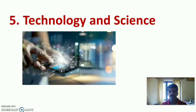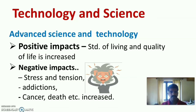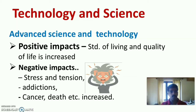The fifth factor is technology and science. Advanced science and technology have both positive and negative impacts on human beings. Positive impacts include increased standard of living and quality of life. Negative impacts include stress and tensions, addictions, substance abuse, cancer, and death, which are increased in count.